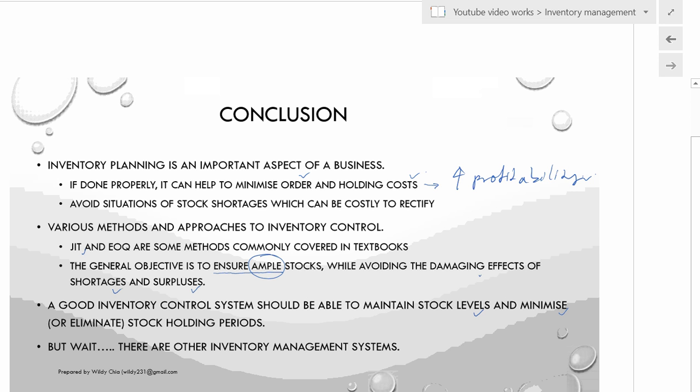We have covered two inventory systems — EOQ and just-in-time. There is also the EBQ, economic batch quantity, and other methods for inventory control. If you are interested to know about the others, you can write in and we can discuss more. Thank you for watching.